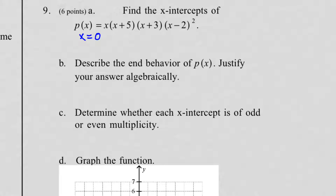The next factor, x plus 5, gives x equals negative 5. x plus 3 gives x equals negative 3. x minus 2 gives x equals positive 2. This last one is squared, but it still gives you the same x-intercept. It really means x minus 2 times x minus 2, so it gives x equals 2 twice — but you just write x equals 2.